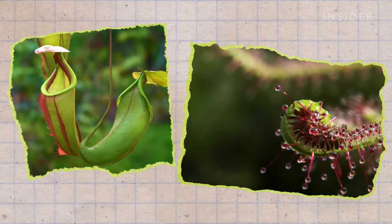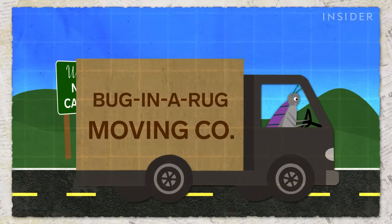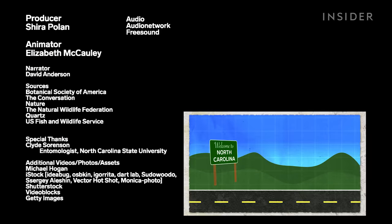That explains why it shares its home with other hungry carnivorous plants, like pitcher plants and sundews. Which could only mean one thing. North Carolina is not a fun place to be a bug.